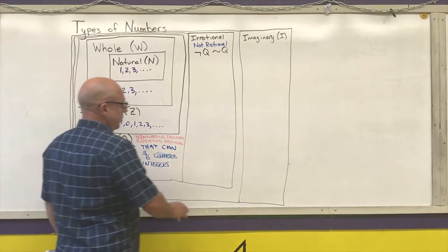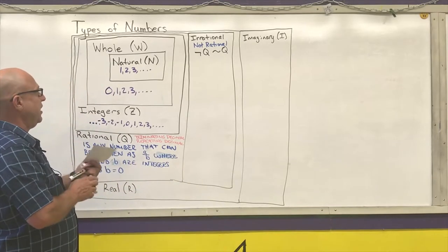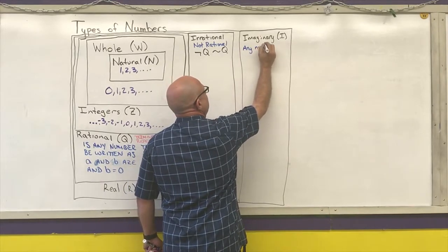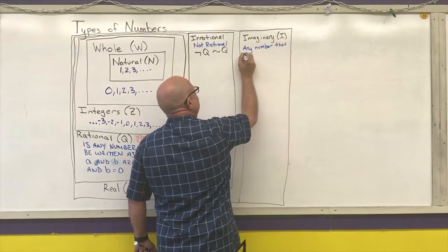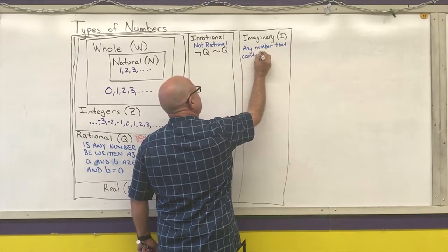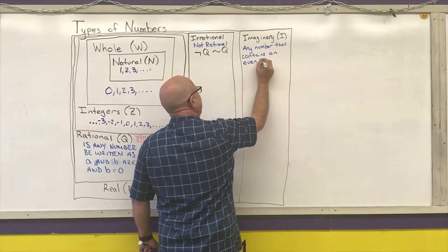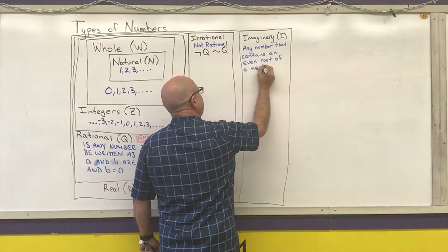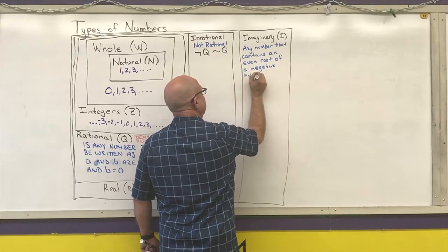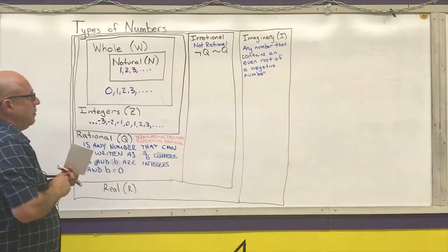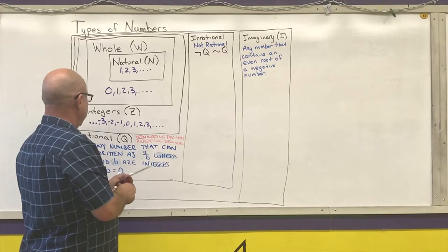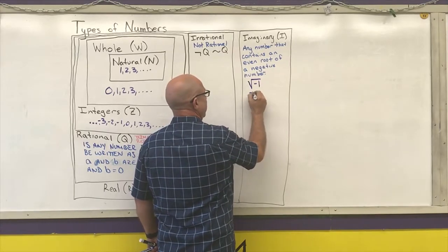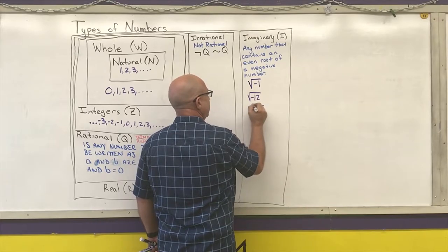The way you tell the difference between a real number and an imaginary number is: an imaginary number is any number that contains an even root of a negative number. Some examples of this would be the square root of negative one, the square root of negative twelve, and the sixth root of negative ten.